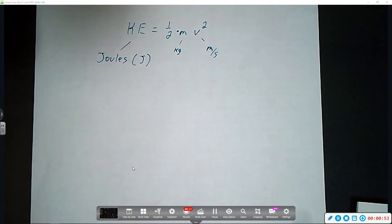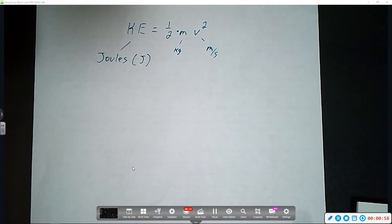And the abbreviation for that is just a capital J. This equation is pretty easy to work with. You just plug in the information that you know.